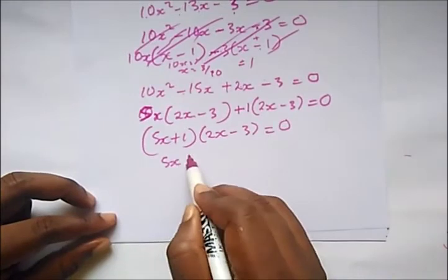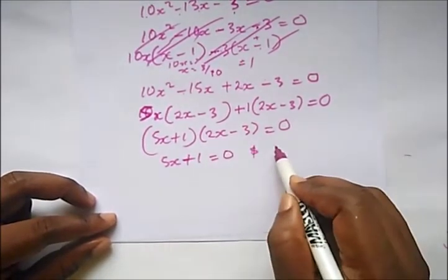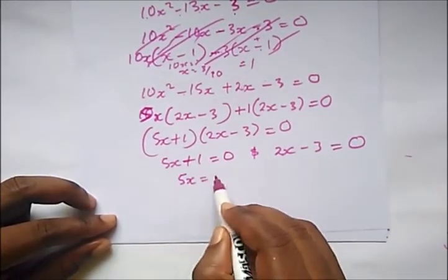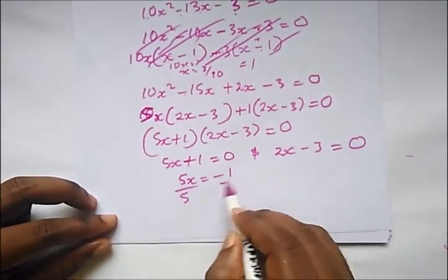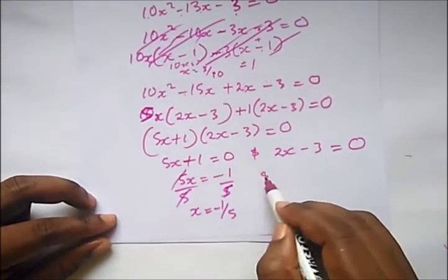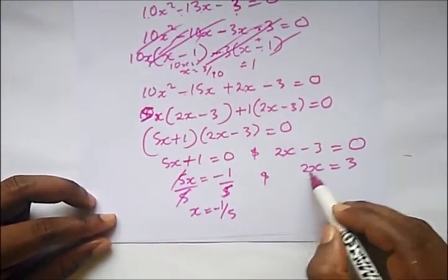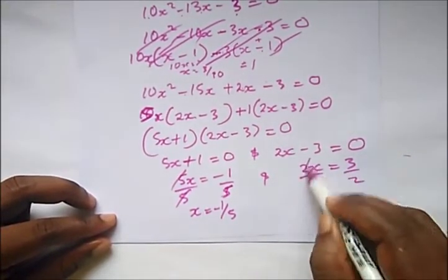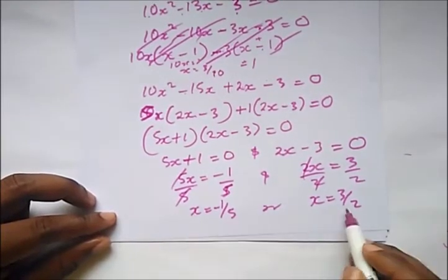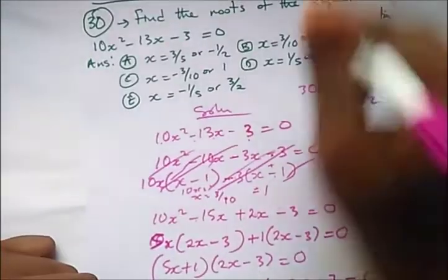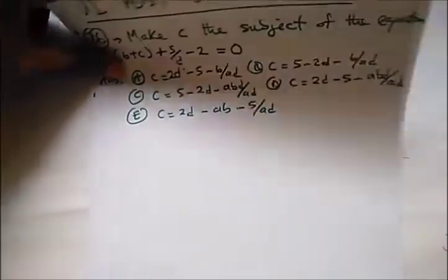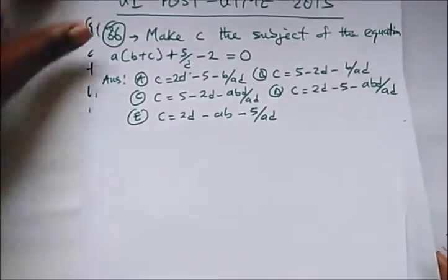So we're left with 5x + 1 = 0 and 2x − 3 = 0. From the first: 5x = −1, so x = −1/5. From the second: 2x = 3, so x = 3/2. Therefore x is either −1/5 or 3/2. Our right answer is option E. I had to take time to explain that so you don't make a mistake when solving it.